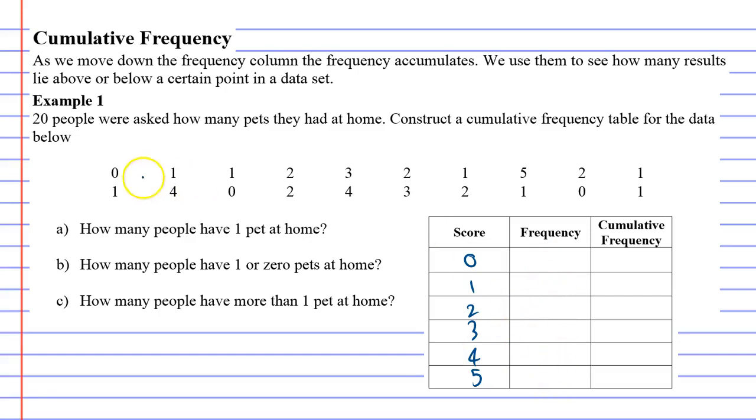Now we calculate the frequency of each. How many zeros do we have? 1, 2, 3. How many ones? 1, 2, 3, 4, 5, 6, 7. How many 2s? 1, 2, 3, 4, 5. How many 3s? 1, 2. How many 4s? 2. And 5s? 1.